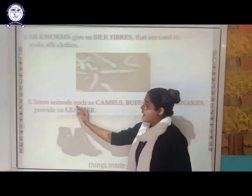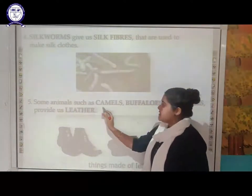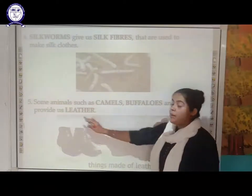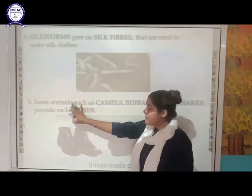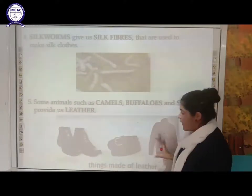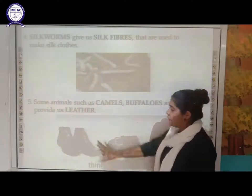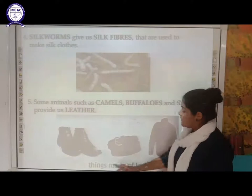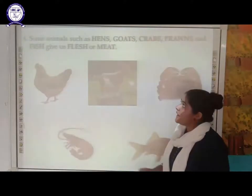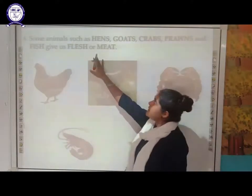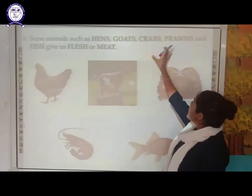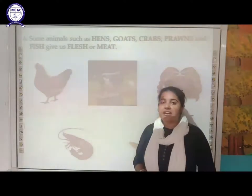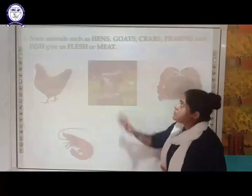Some animals such as camels, buffaloes, and snakes provide us leather, and from that leather we make different products like shoes, belts, and coats. There are also animals such as hens, goats, crabs, prawns, and fishes which provide us flesh or meat.